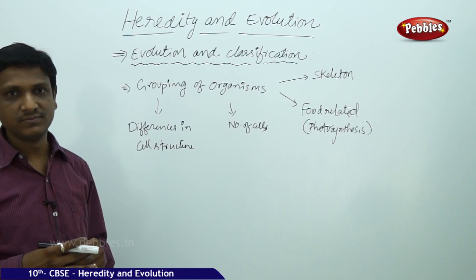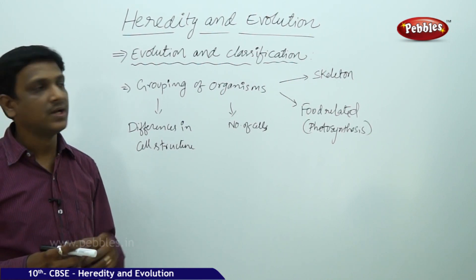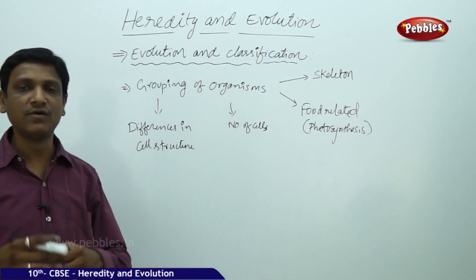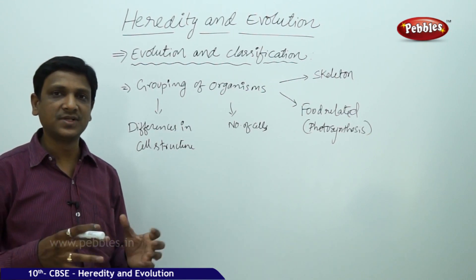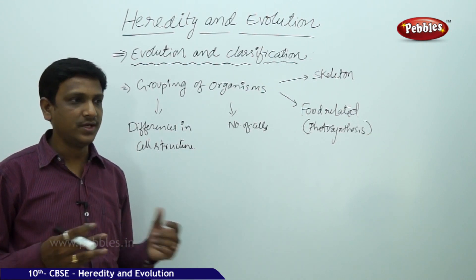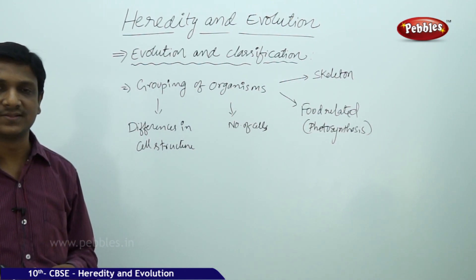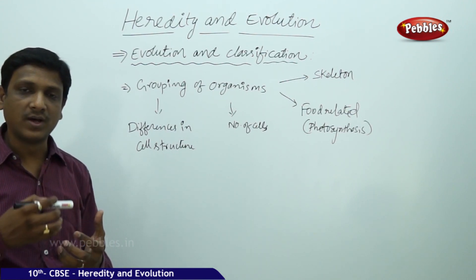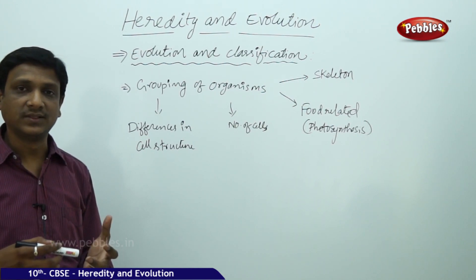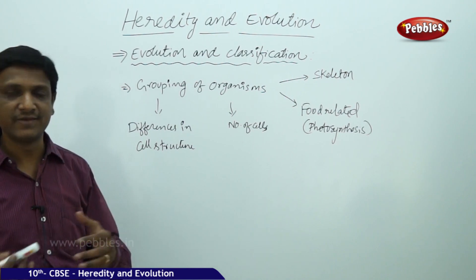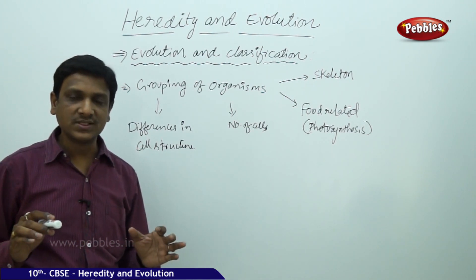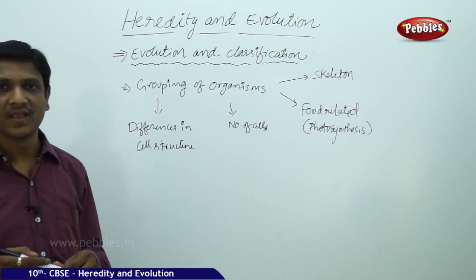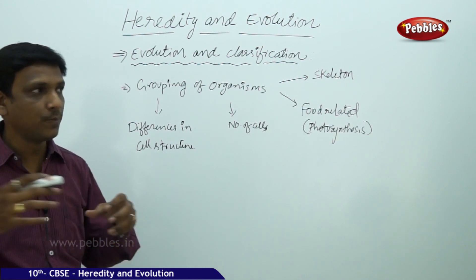To study evolution better, we need to look at the classification of organisms — that means the grouping of organisms. This grouping helps us understand better. It is not possible to study each and every organism individually. So organisms are studied under groups, and that grouping is called classification.